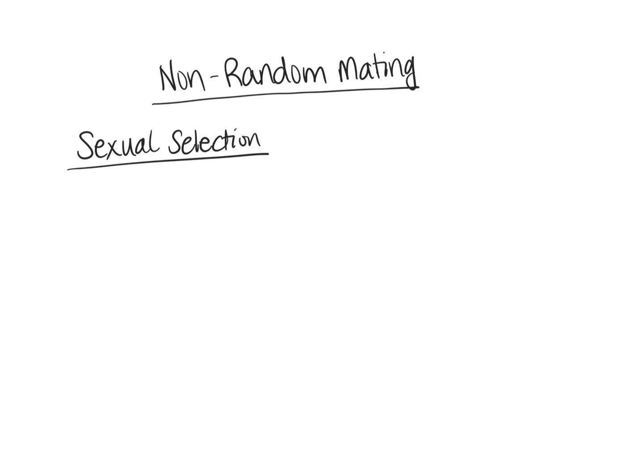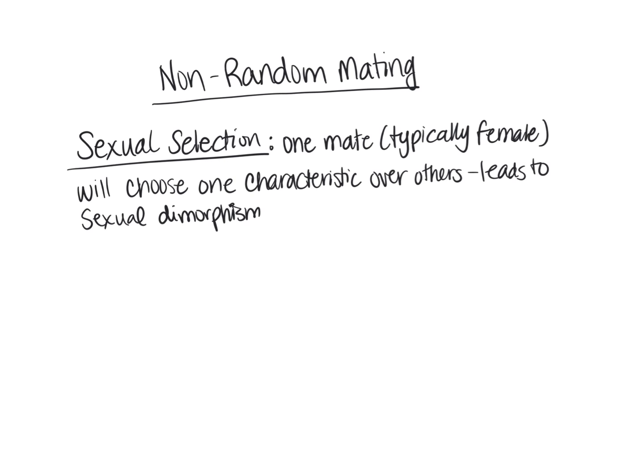The first type of non-random mating we're going to talk about is sexual selection, which could kind of fall under the natural selection category. In this case we're looking at what happens when a male or female chooses particular traits of an organism and favors those traits, even though they may not necessarily be the most favorable in terms of natural selection. One of the mates — and it's typically the female — is going to choose a characteristic that she finds attractive and wants passed on to the next generation over others.